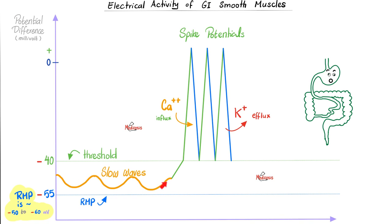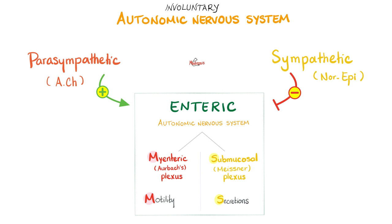Here are the slow wave rhythms, humming and buzzing in the background, on top of which we lay the true action potentials — the spike potentials in the foreground. Depolarization or activation is caused by calcium influx, or calcium-sodium influx. Once calcium enters the smooth muscle cell, it binds calmodulin, then activates a kinase which adds a phosphate to your myosin light chain. Now you have myosin light chain phosphate, which is active and causes contraction.